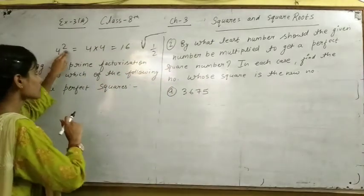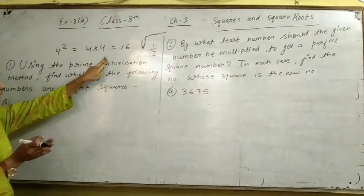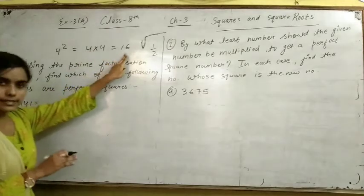Suppose that we have 4 square. 4 squared means 4 two times. If we have 4 two times, then we have the product. Then we have 16.